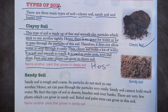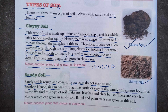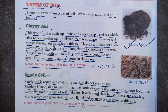Sandy soil is rough and coarse. Its particles do not stick to one another, so air can pass through very easily. Sandy soil cannot hold much water. We find this type of soil in deserts, beaches, and river banks. Very few plants can grow in sandy soil — babul and palm trees can grow in this soil. Bean plants are another plant that grows in sandy soil.